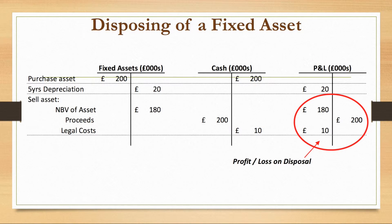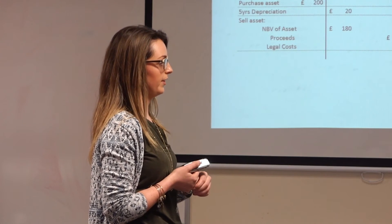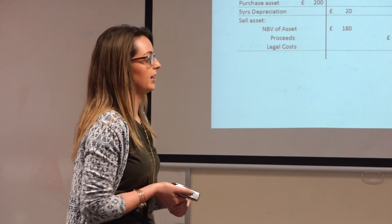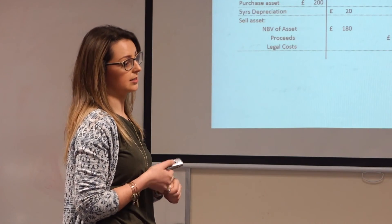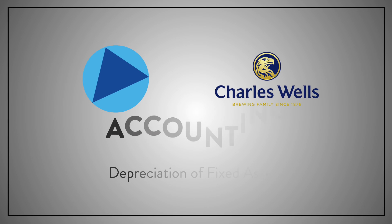Associated legal costs with selling the building would be a cash outflow of 10k. Then in your P&L, you're showing your proceeds of 200, then your cost of selling the asset and the net book value of the asset, so you're making an overall profit of 10k. That's what goes into your P&L.